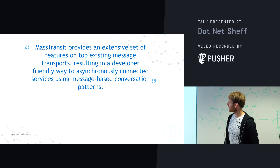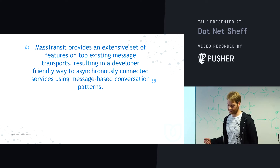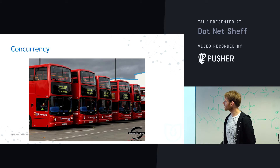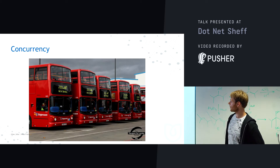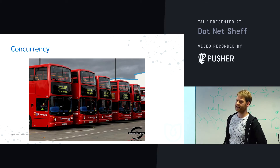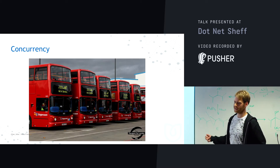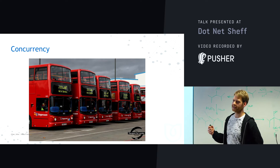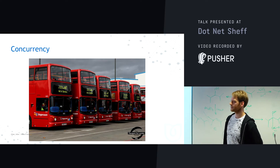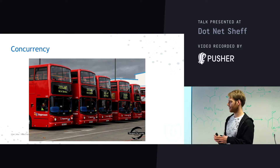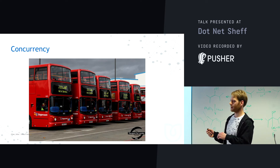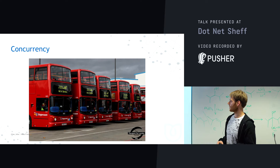MassTransit provides a lot of abstract stuff on top of messaging platforms. Concurrency allows us to deal with multiple things being read off the queue at the same time and processed on consumers. We can either scale out in partitions or scale out by putting in more load — like multiple threads.